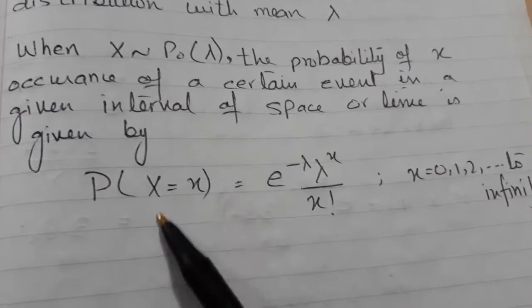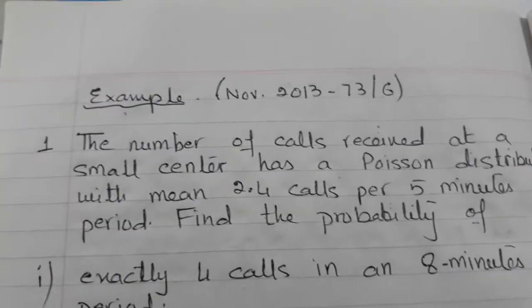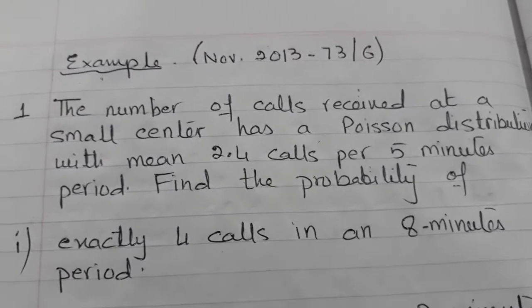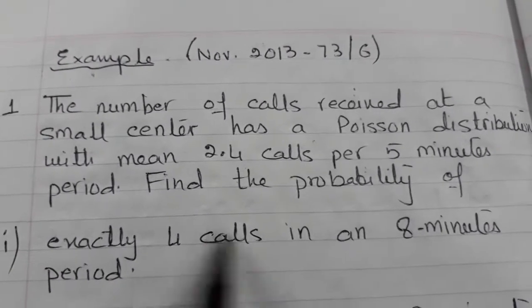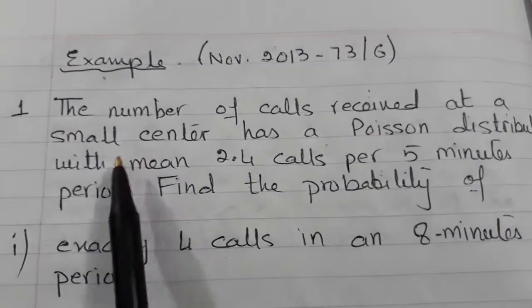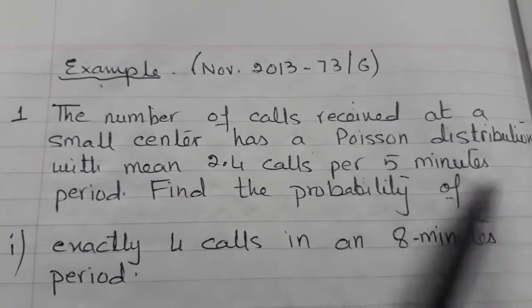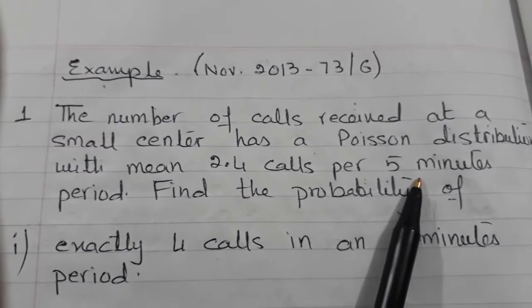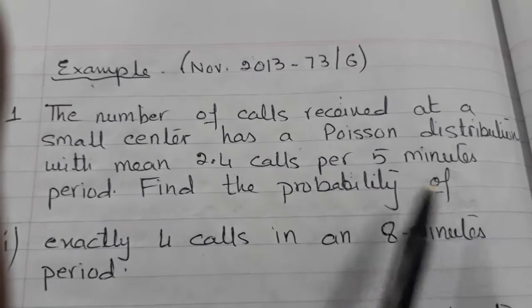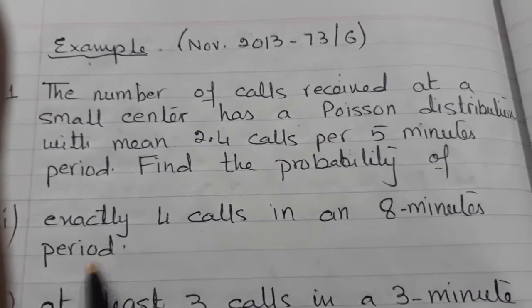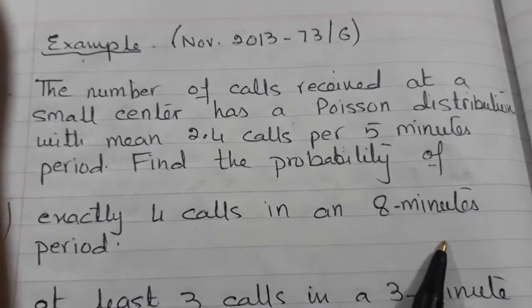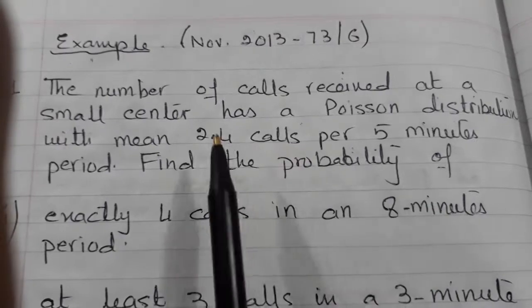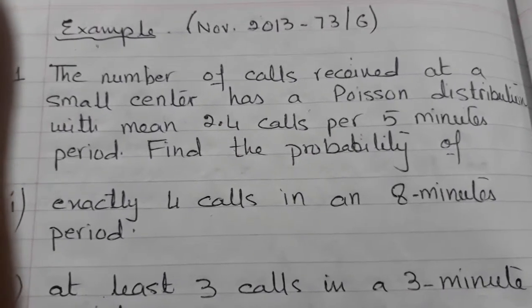The question I have picked is from November 2013. The number of calls received at a small centre has a Poisson distribution with mean 2.5 calls per five minutes. The interval given for receiving calls is five minutes, and approximately 2.4 calls are received in that period. You have to find the probability of exactly four calls in eight minutes. So you will need to change your lambda from 5 minutes to 8 minutes.